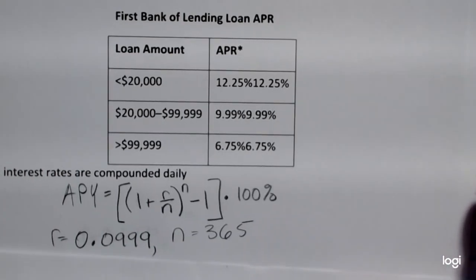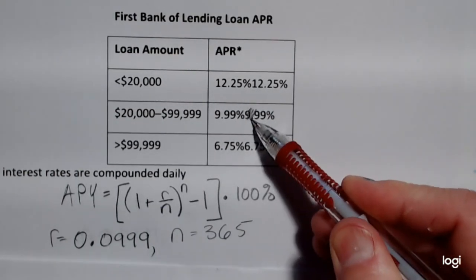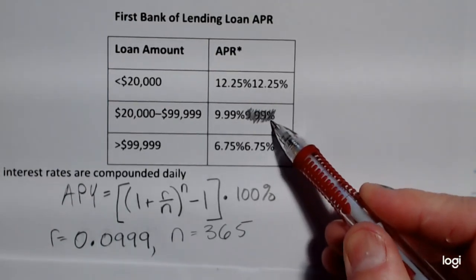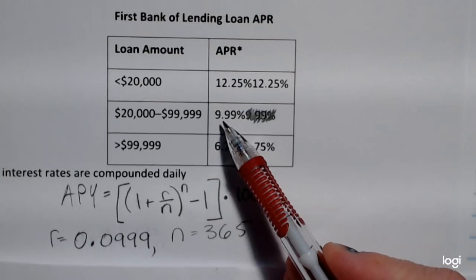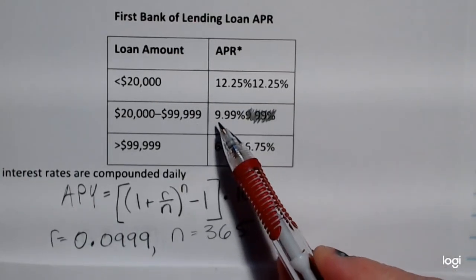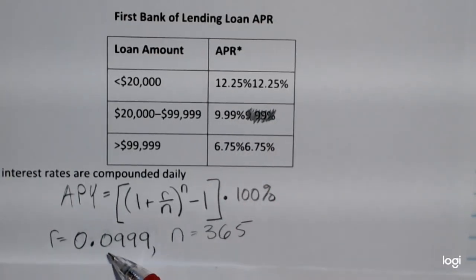So looking at the given table, I don't know why it printed out this way. It printed everything twice in this column. The APR for that particular loan range was 9.99%. As a decimal, that's going to be 0.0999.